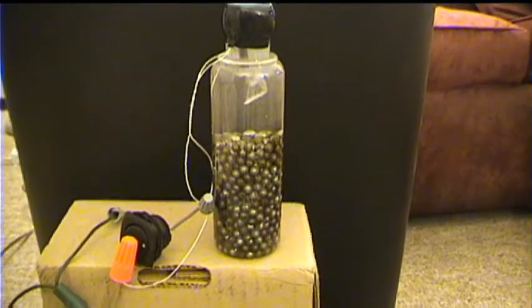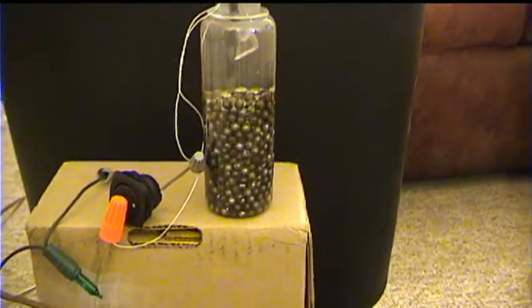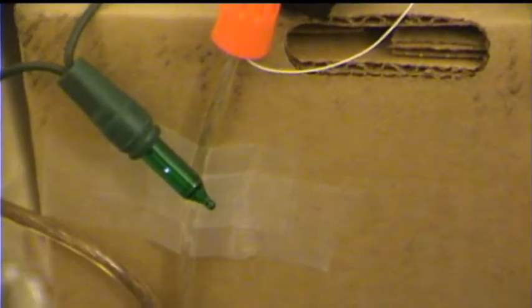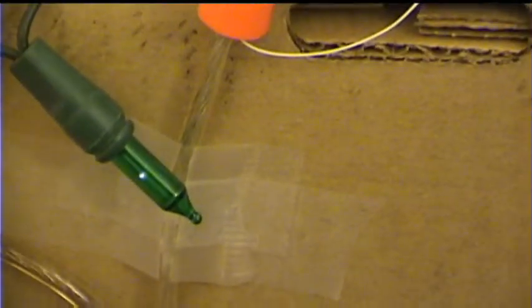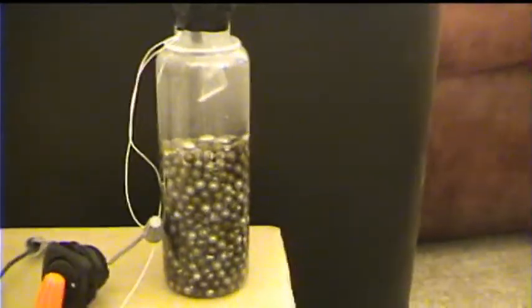Alright, so now to make this experiment complete, what I want to do is, you can see that the Christmas tree light is just barely lit. So the conductivity right now of the electrolyte is quite low. If I added more baking soda, of course, that would increase dramatically.